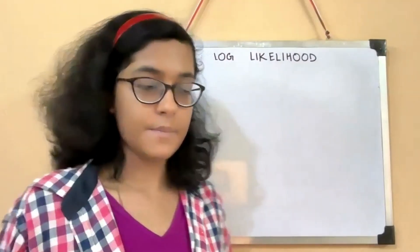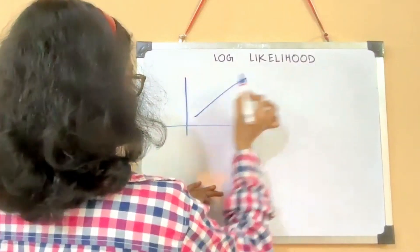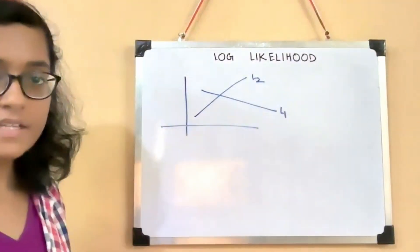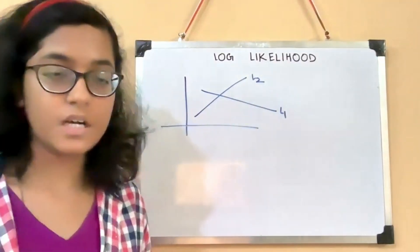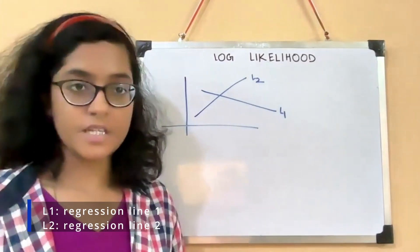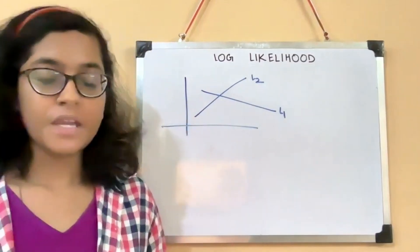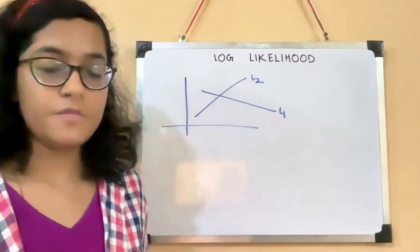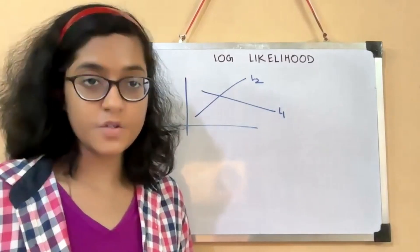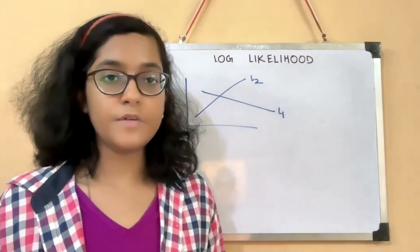Let's consider an example. So these are two lines — L2 is a linear regression line that fits a particular type of data, and L1 is another linear regression line that fits a different kind of data. If you try to use L1 to fit data that follows the distribution of L2, then the likelihood of L2's data being generated by L1 will be very low.